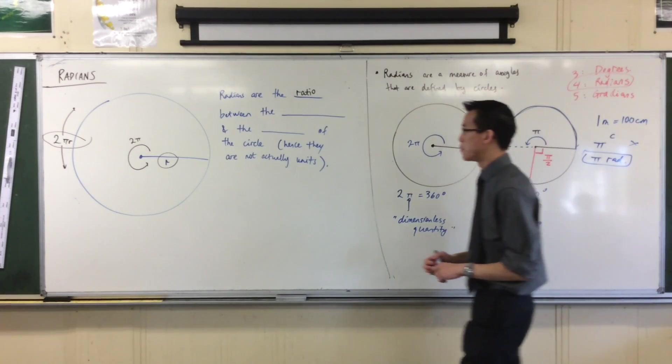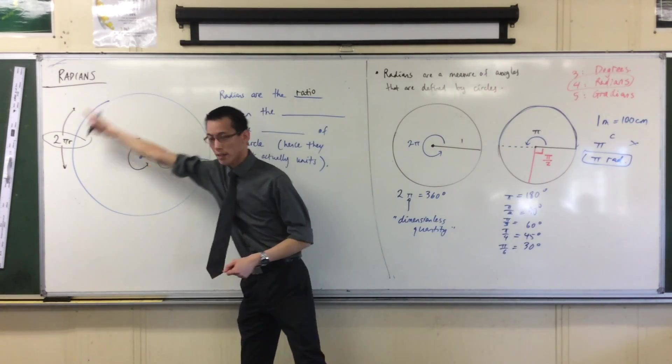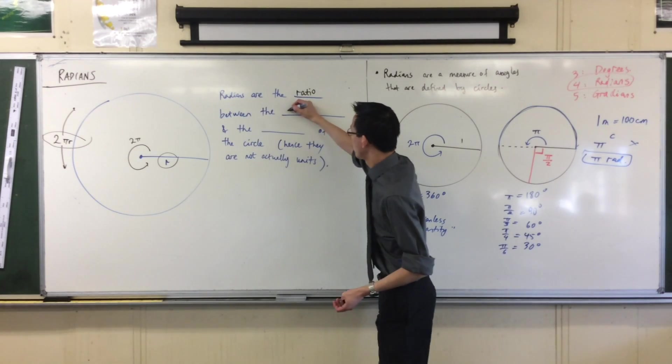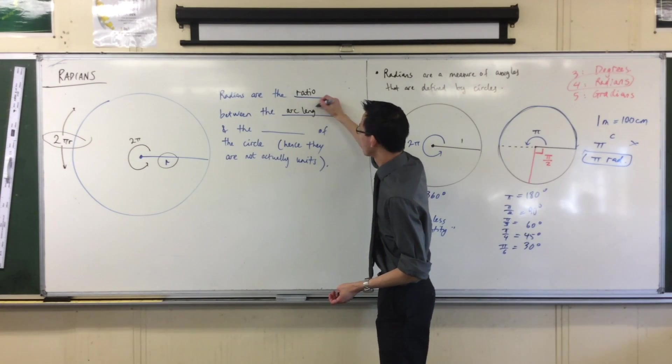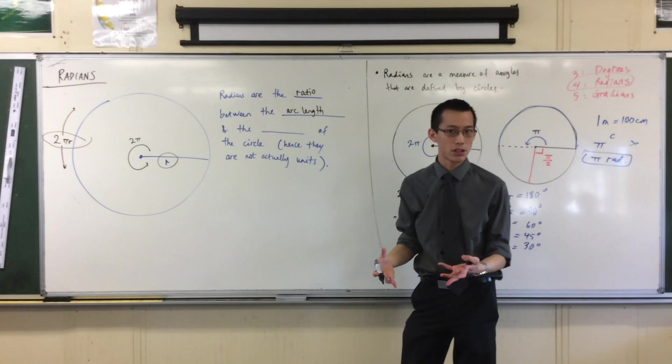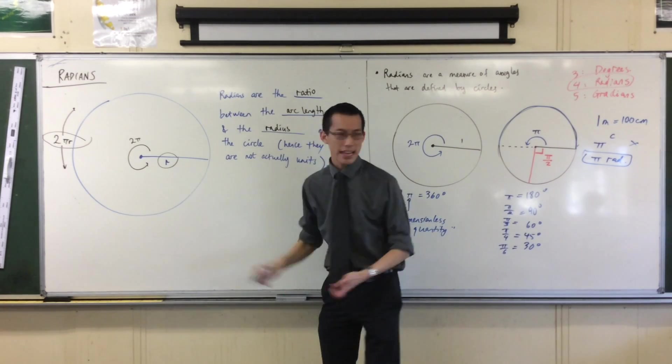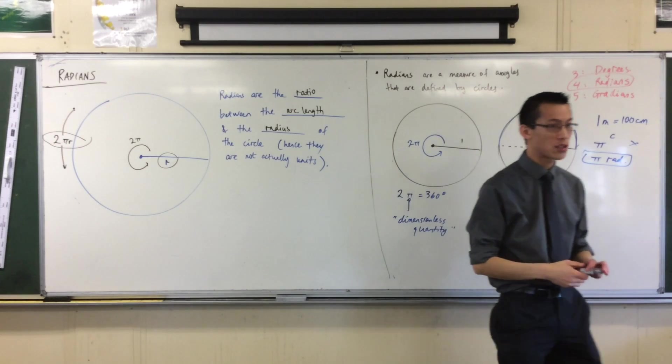Radians are the ratio between however long this arc is, in this case it's the whole circle, that's why it's the circumference. Between the arc length and the radius of the circle I'm in. The reason why this is great is because it catches the size of the circle built in. You can make your radius a 1, or a 100, or a quarter, or anything you like.